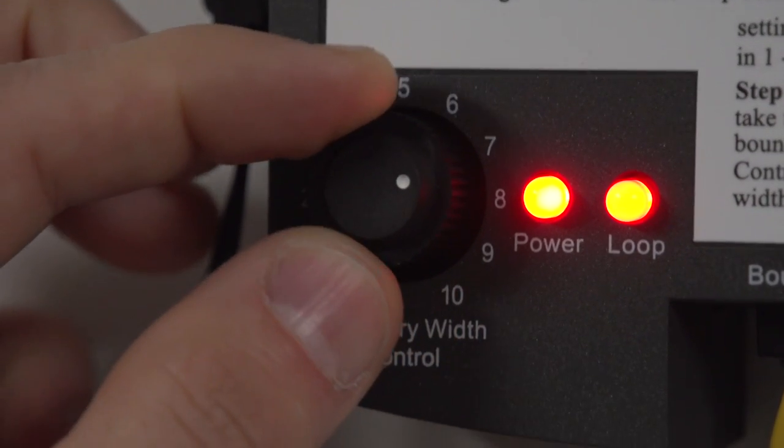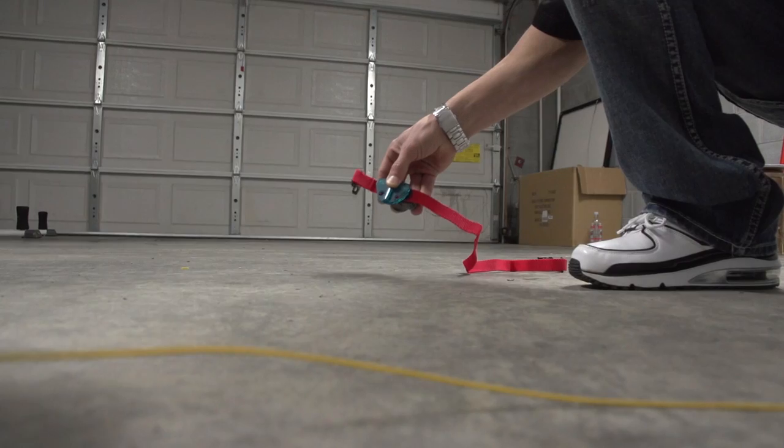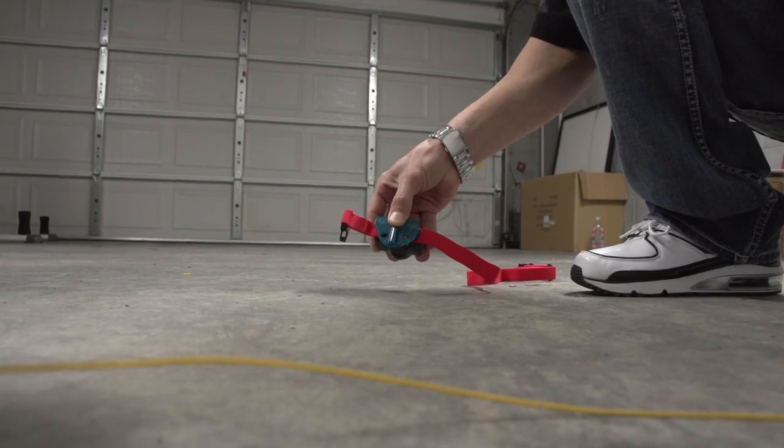Turn the boundary width control knob to 10 and repeat the previous step. The distance where the receiver collar activates should be greater than before.